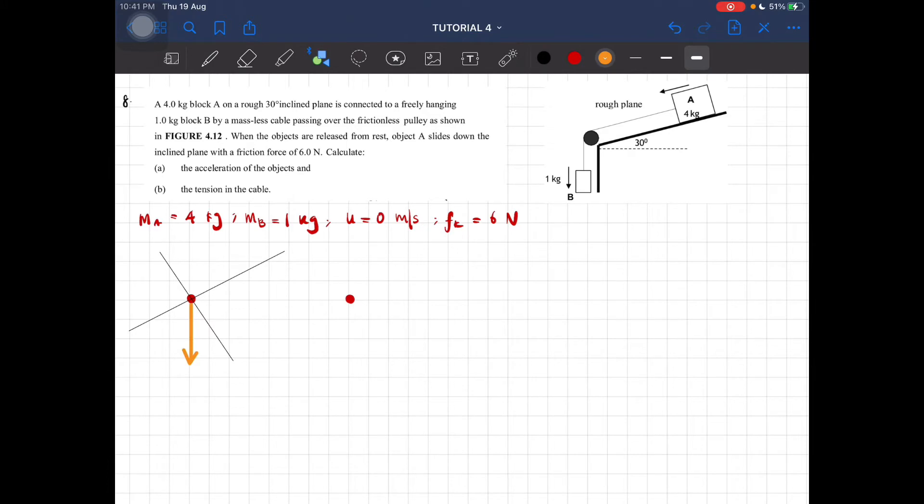Now we can draw the free body diagram. We have weight here, normal force, and since the velocity is going this direction, the friction force will be in the opposite direction. We also have tension. That is the free body diagram for block A, and then we have block B with just weight and tension.